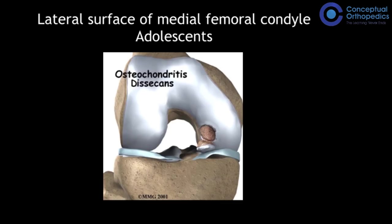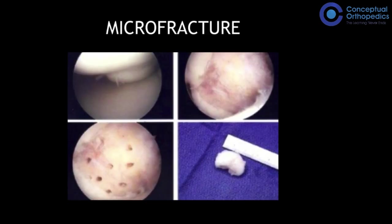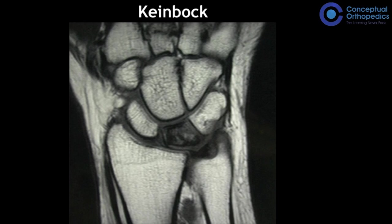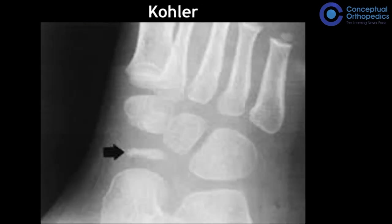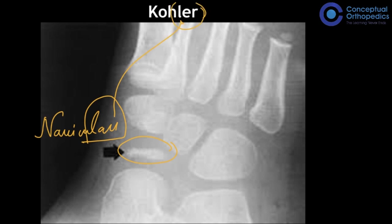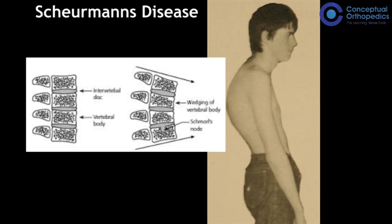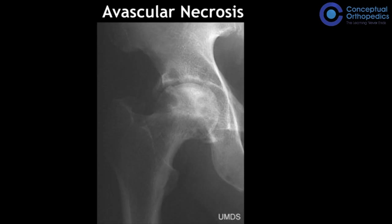Common sites of osteochondritis include: the lateral surface of the medial femoral condyle (treated by micro-drilling or microfracture techniques); the lunate, called Kienböck's disease — both lunate and Kienböck's have an 'n' in the center to help remember them; the navicular, called Köhler's disease — both end in '-ler'; osteochondritis of the vertebral body periphery is Scheuermann's disease; and of the central part of the vertebral body is Calvé's disease. These all occur in the adolescent age group.